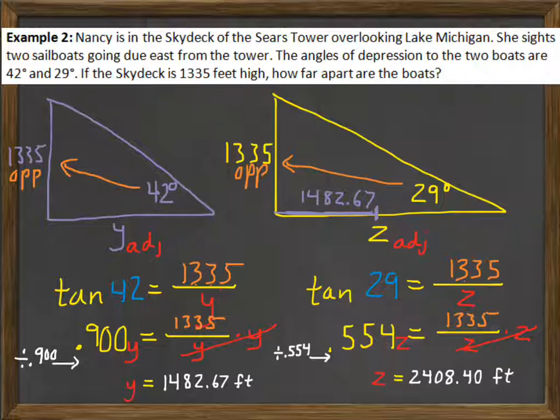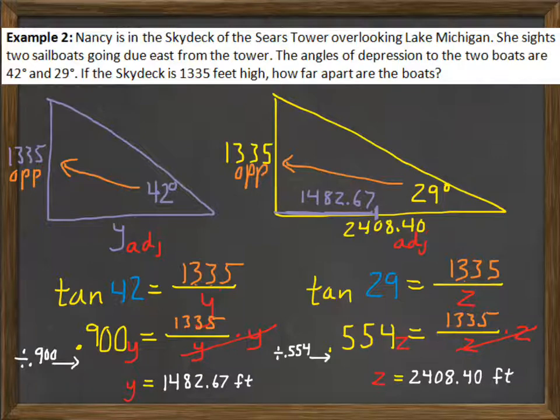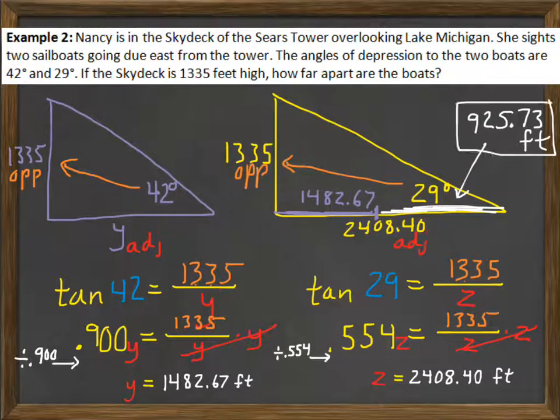So, in that triangle, I'll mark off Y, which is 1482, and Z, the entire side, which is 2408. What are we looking for? We're looking for the distance between the two boats, which is the remainder. Subtracting those two, I get 925.73 feet.